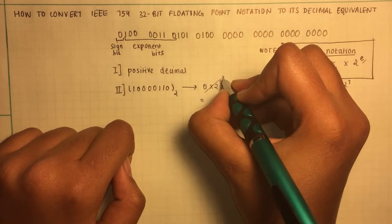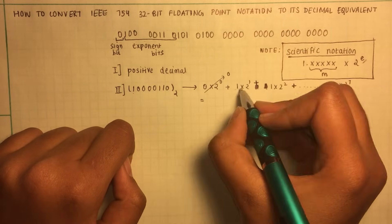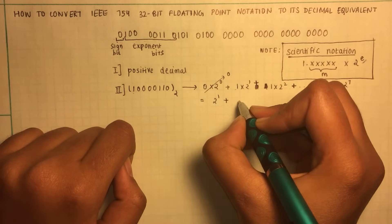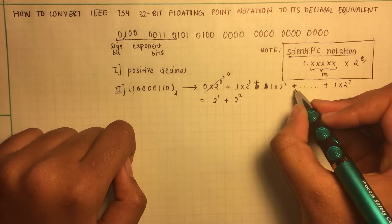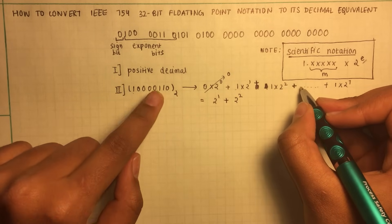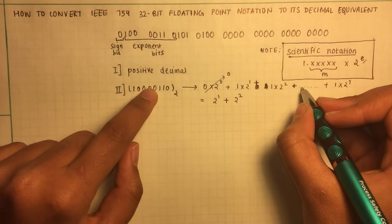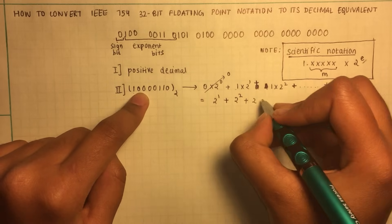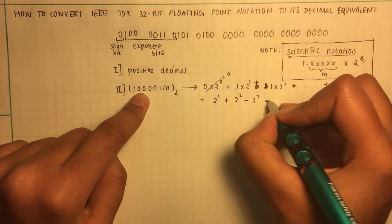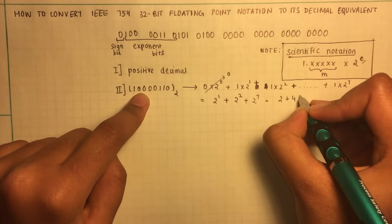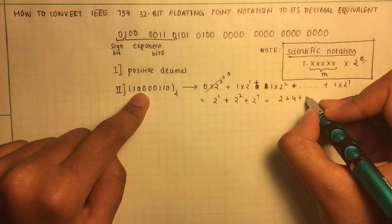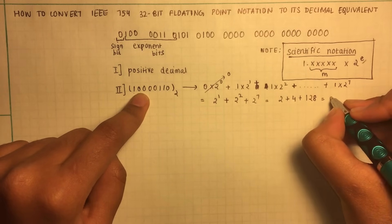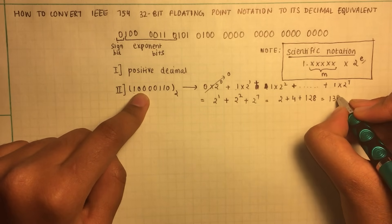So this would be two to the one, plus two to the two. These will all result in zeros. So, plus two to the seven. So that's two, plus four, plus 128. This will be 134.